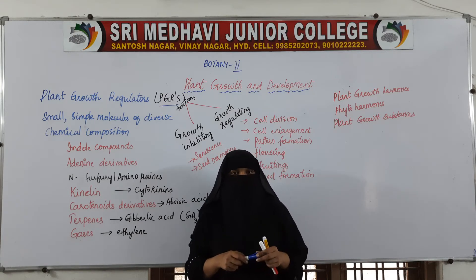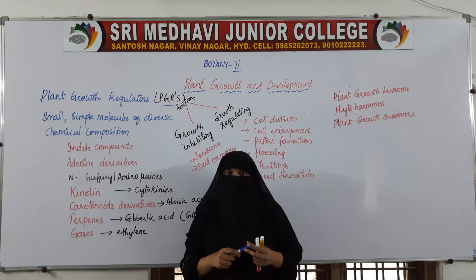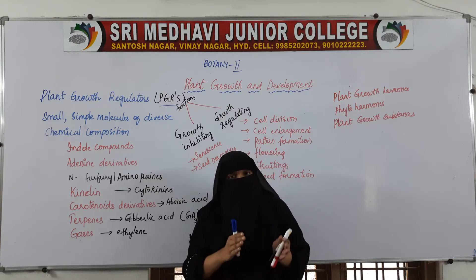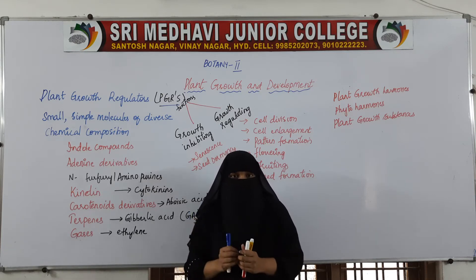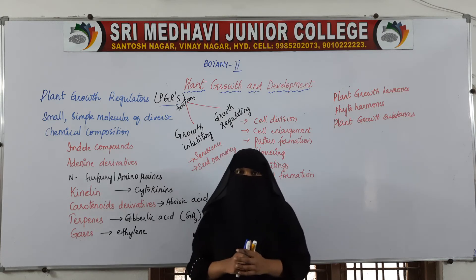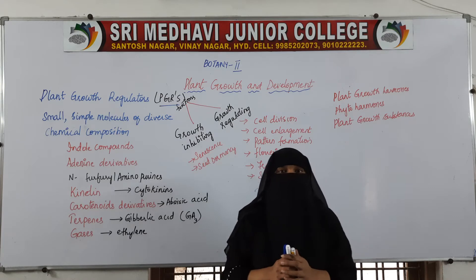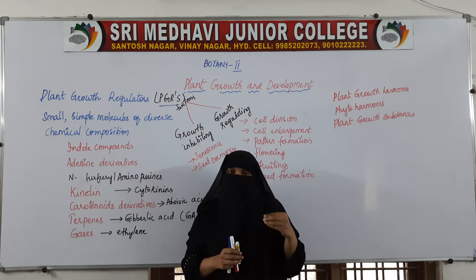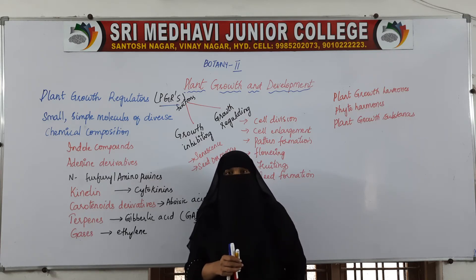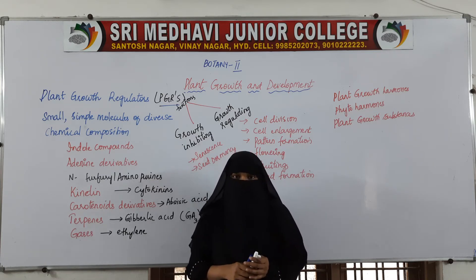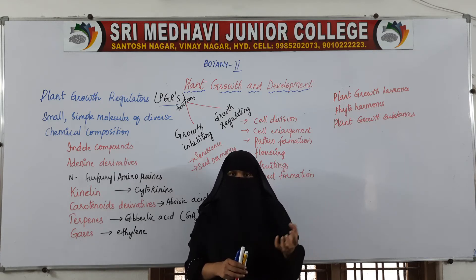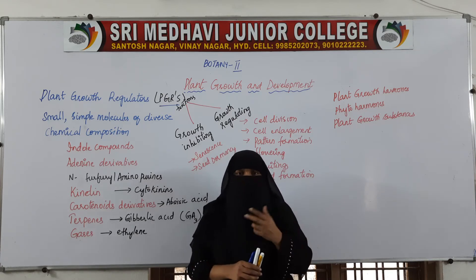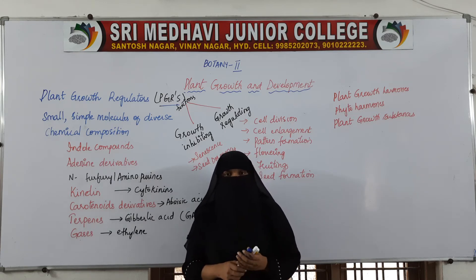In human beings as well as in animals, certain chemicals called hormones are produced at one place and transported to where they are required through the blood, as they are produced by ductless glands. Since there are no ducts connecting one place to another, whatever chemical the glands produce is released into the blood. When blood flows to a particular organ, that organ catches the hormone and starts functioning.